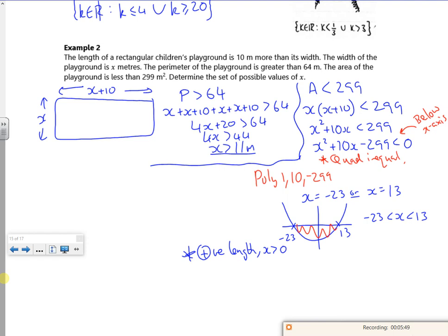So x has to be greater than 0. Is it technically greater than or equal to 0? Yeah, I guess it has to be greater than 0. So then that cuts my minus 23 is less than x is less than 13. So that becomes 0 is less than x is less than 13.